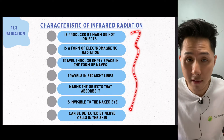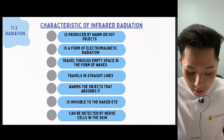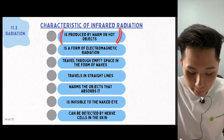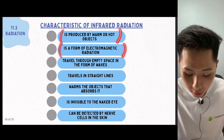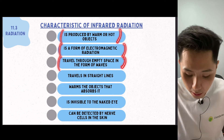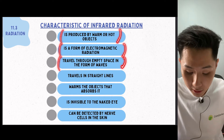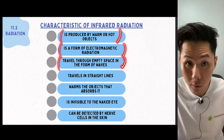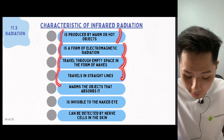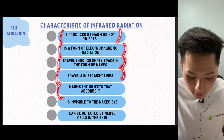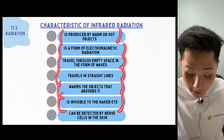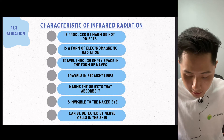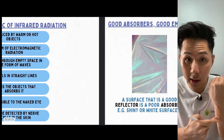Here are some characteristics of infrared radiation. They are produced by warm or hot objects. It is a form of electromagnetic radiation that travels through empty space in the form of waves — it can travel through vacuum as well. It travels in a straight line, warms the object that absorbs it, is invisible, and can be detected by nerve cells in the skin.